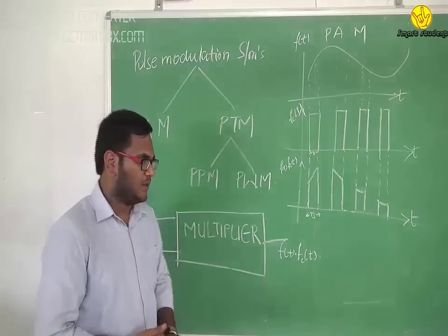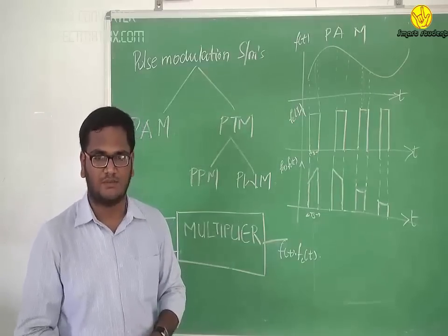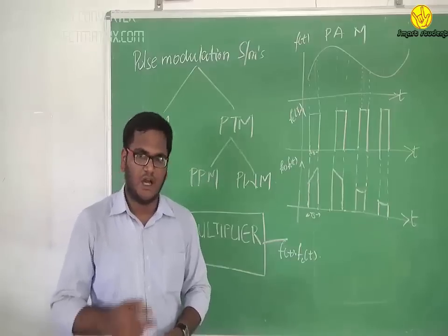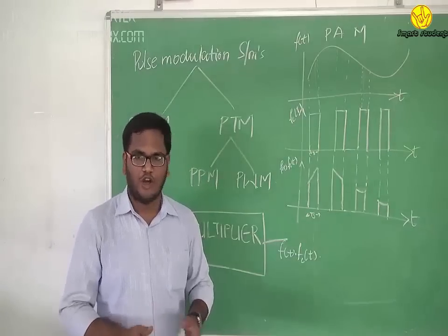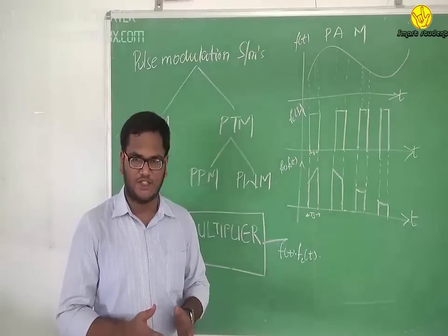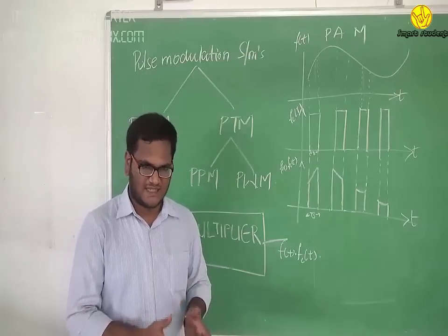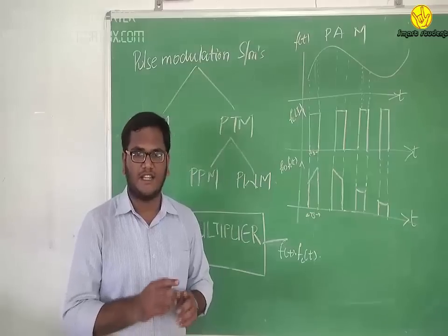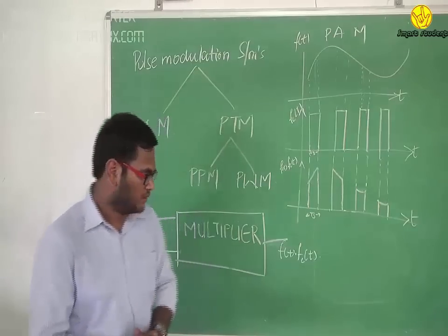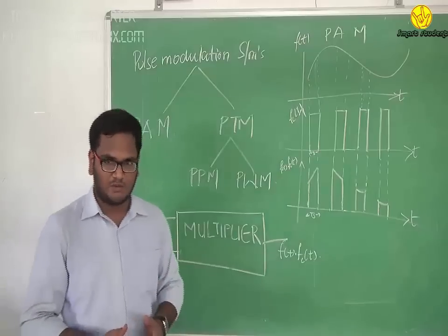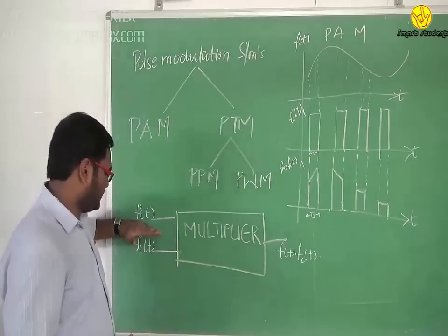Pulse amplitude modulation can be achieved by two techniques: natural sampling and flat top sampling. Sampling can only be achieved when a specific condition is satisfied — fc is greater than or equal to two fm. This is the Nyquist criteria.